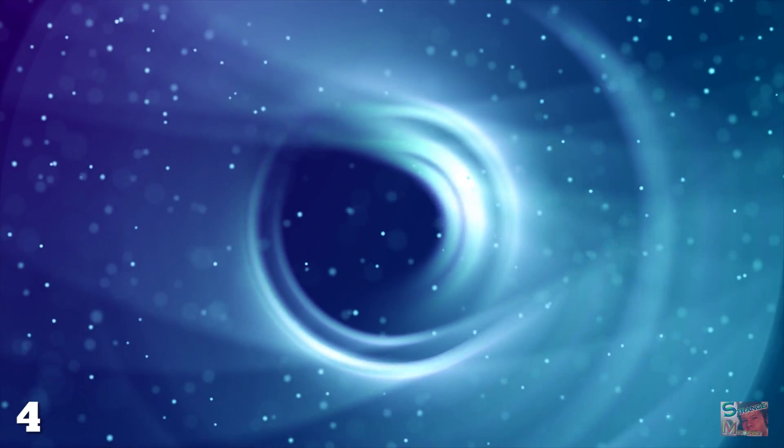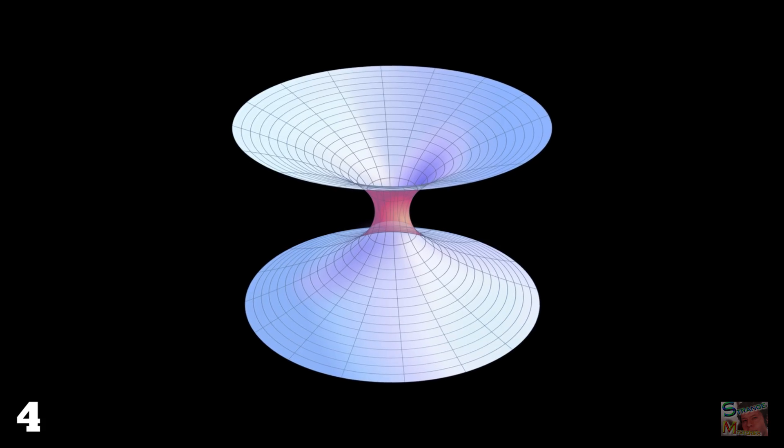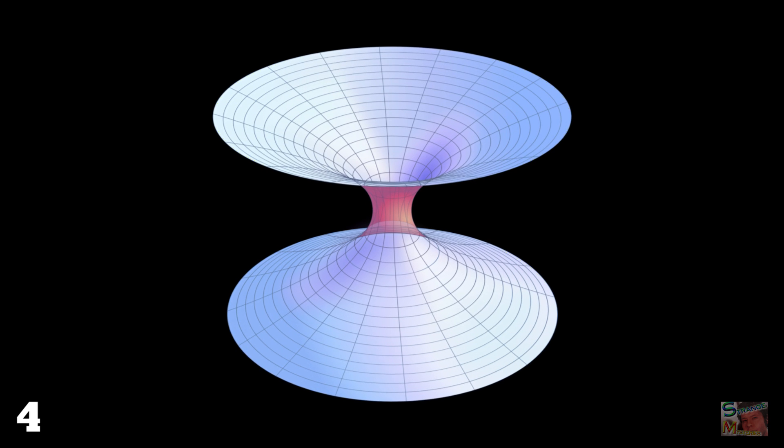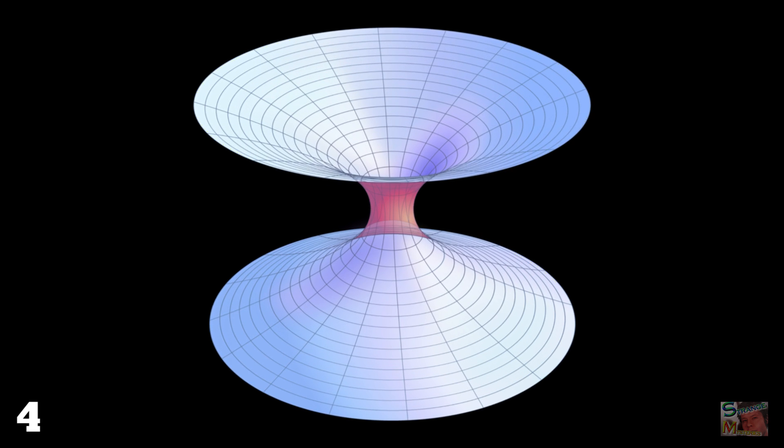Starting at number 4, We Already Did. A wormhole is a shortcut consisting of two openings at different points in space-time, with an invisible tunnel between the two, allowing things to travel between them.